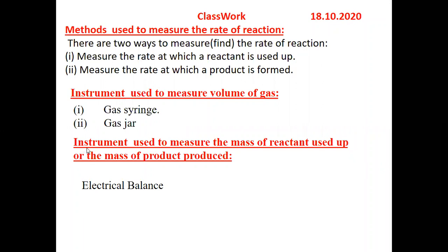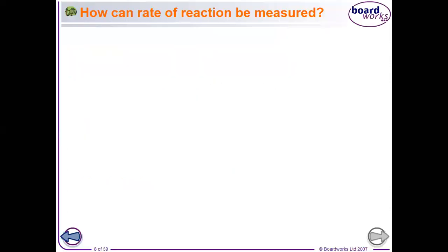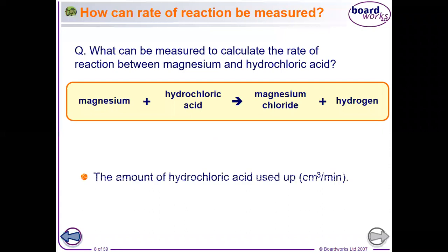The other instruments used to measure the mass of reactants used up, or the mass of product produced, are electrical balances. We use electrical balances because they are very sensitive — they can detect milligrams or very small amounts easily.